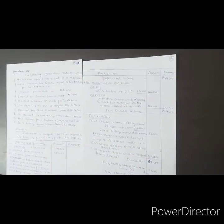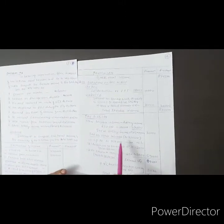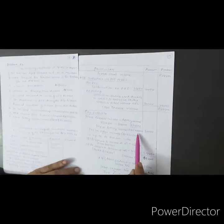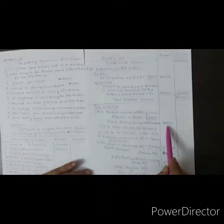Tax on lottery income is at 30 percent flat rate. 30 percent on 1 lakh rupees equals 30,000 rupees as separate tax.